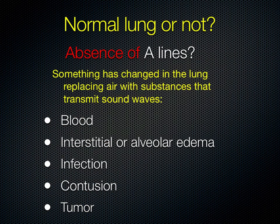So what if there aren't any A lines? Again, A is for air, so in normal lung you should see A lines. If there are no A lines, that means something has changed in the lung that replaces air with substances that can transmit sound waves — and that substance can be fluid, blood, pus, contusion, or atelectasis.